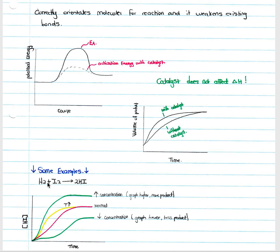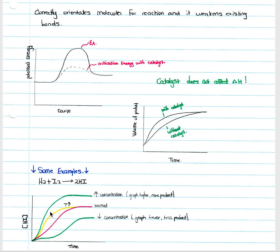For the example reaction H₂ + I₂ → 2HI, we plot HI formed over time. Increasing temperature increases the reaction rate and the graph reaches completion earlier. Decreasing the concentration of reactants gives a lower final amount of HI and a slower gradient due to fewer effective collisions. Increasing concentration gives more products, a higher endpoint, and a steeper gradient due to increased effective collisions and a greater rate of reaction.